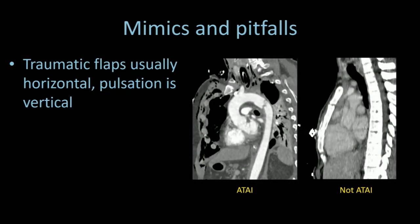Consider the anatomy and pathophysiology of aortic injuries. Aortic injuries typically manifest with transverse flaps, so the flap should cut across the aorta. Pulsation is typically vertically oriented. If you do multi-planar reconstruction, it's vertically oriented, you're probably dealing with an artifact.